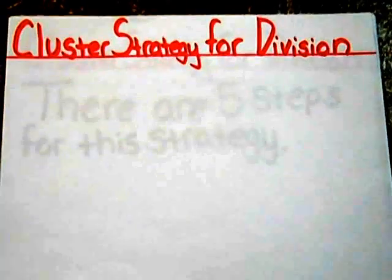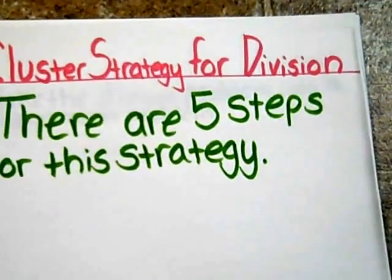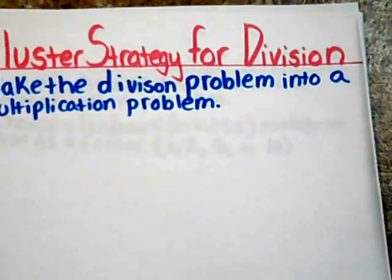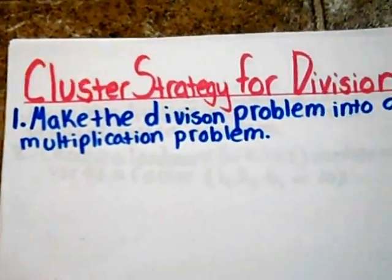This is the cluster strategy for division. There are five steps for this strategy. The first step is to make the division problem into a multiplication problem.